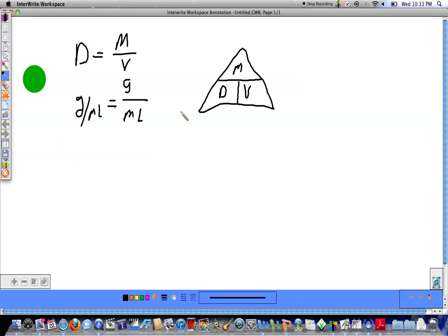So, the first thing I do is want to check to make sure I did it right. So, what I'm going to do is I'm going to cover up the D in my triangle and if I get mass over volume, then I know I did it correctly.